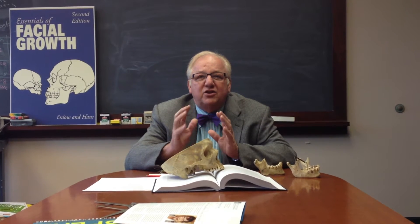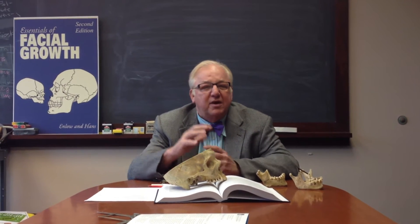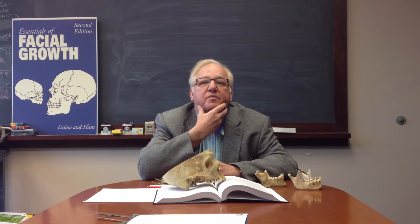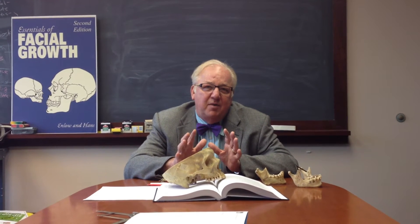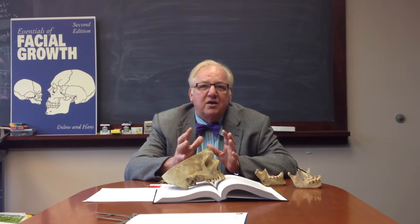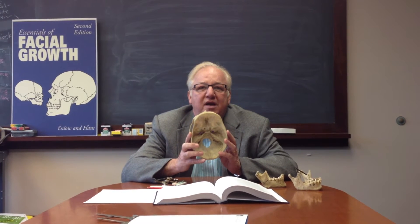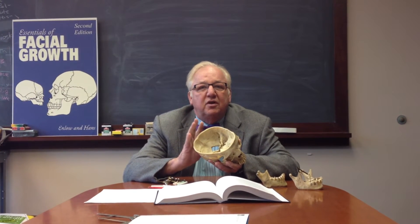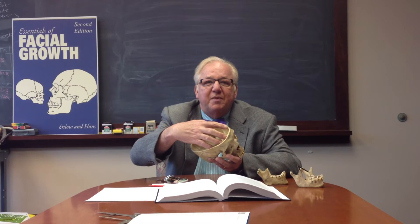Let's start with Moss's functional matrix and talk about control of growth as we look at the skull here — the maxilla and the mandible. What Moss believed was that soft tissue is primary. So what soft tissue mass is growing in the area of the neurocranium? Obviously, it's the brain. So Moss's functional matrix hypothesis holds that the growth of the cranium is due to the expansion of the brain.